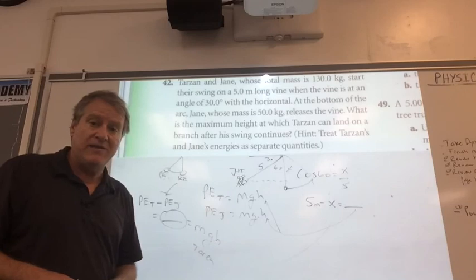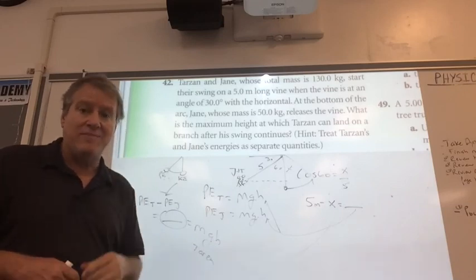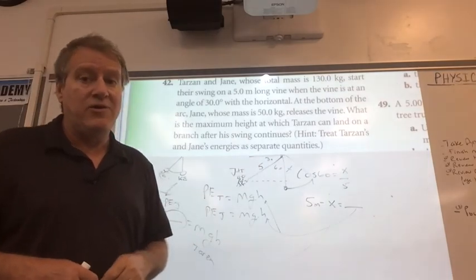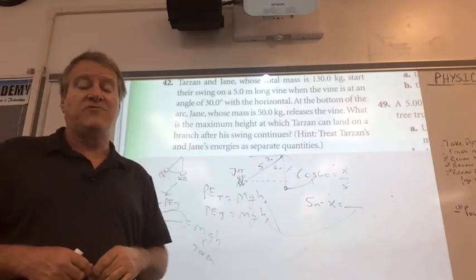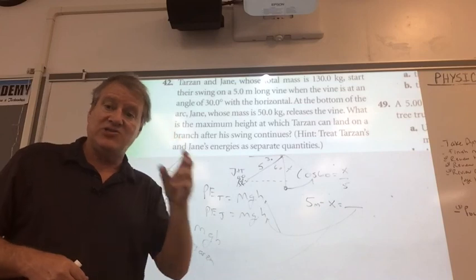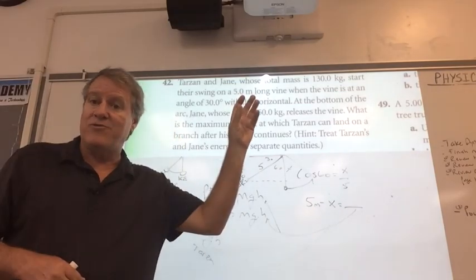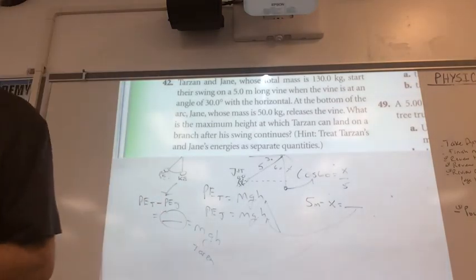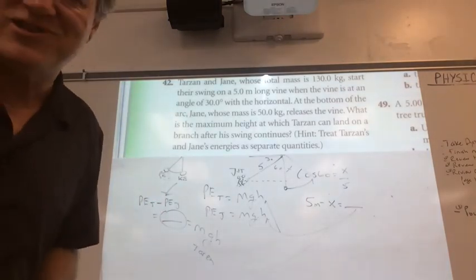The answer is the height that it goes on a pendulum is independent of mass. Remember, Aristotle thought mass determines how fast things go down, but we know mass is not a factor. The height he achieves will be the same whether Jane's on there or not. That's a crazy thing to think about. Alright, let's stop there and we're going to do the next question on the next video.